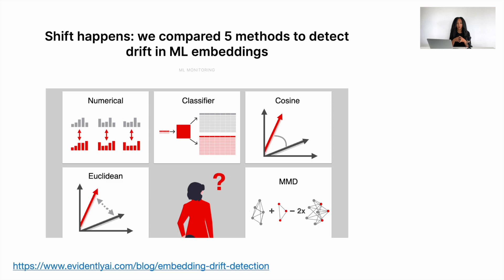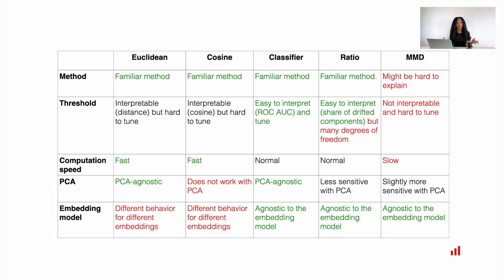I also wanted to recommend to you our blog, where we compared five different methods to detect drift in embeddings. You might find very interesting the table we created in this blog, where we compared different approaches to detect embeddings drift with different methods, like distance-based using Euclidean and cosine distances. We also used model-based method, which is classifier to distinguish between reference and current data. We used ratio of drifted components and MMD method. We compared it with different parameters, like using different thresholds, we assessed computational speed, we applied dimensionality reduction using principal component analysis, and we used different embeddings to encode our raw text data. So we compared those methods between each other with respect to different criteria.